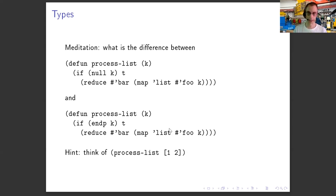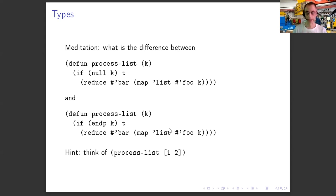`null` is true only if K is nil, and it's nil for everything else. `endp` is true only if K is nil, but it's an error if K is not a list. So what happens when we look at types? When I use reduce and map, those will actually work with any kind of sequence — so `process-list` as the first implementation will kind of work for any sequence, not just lists, except `null` is looking for the empty list but nothing handles the empty vector or empty string.